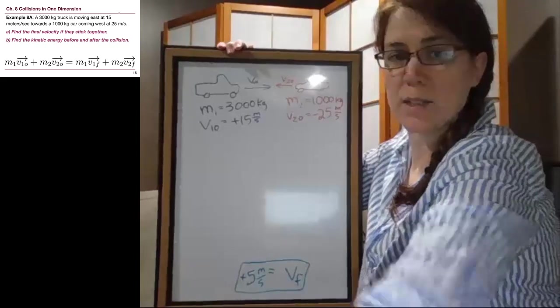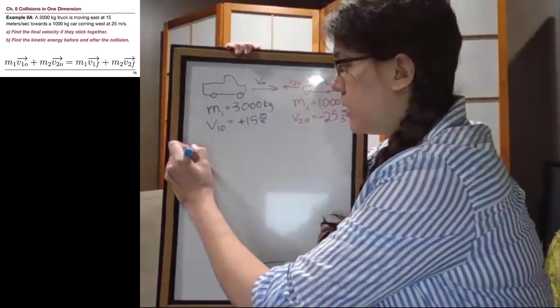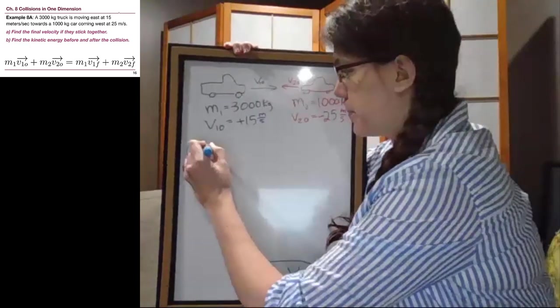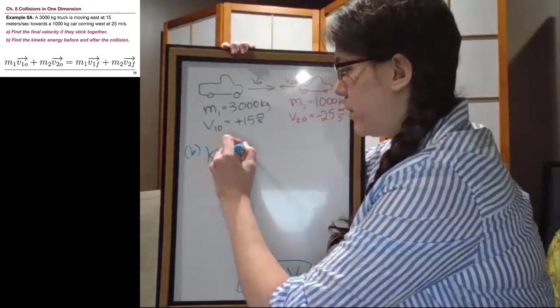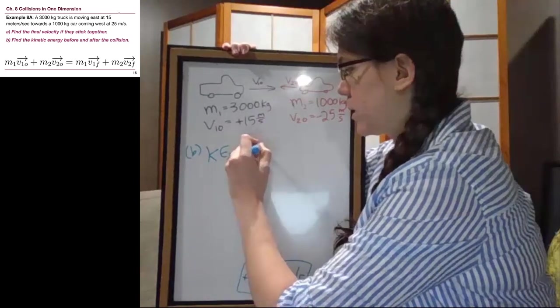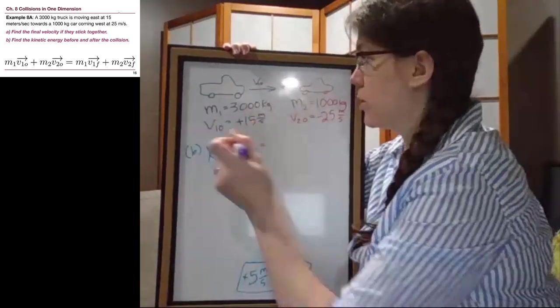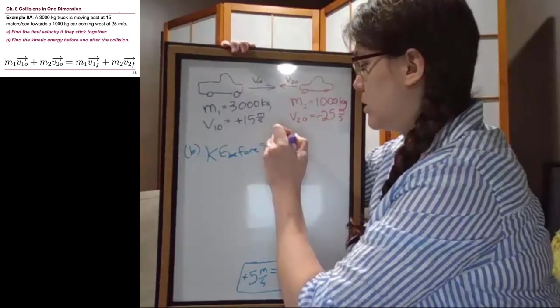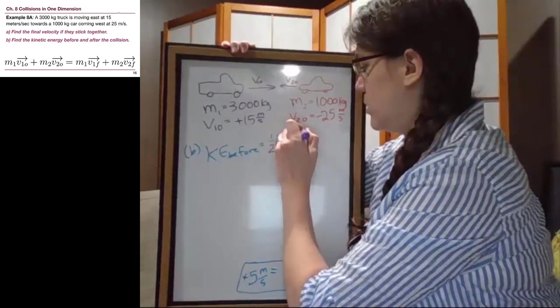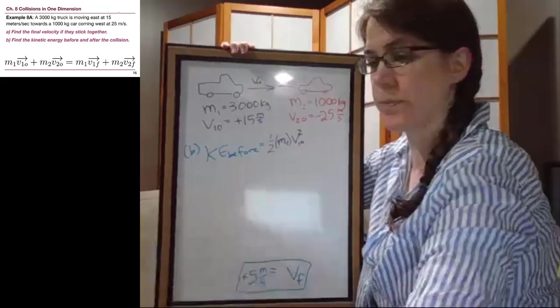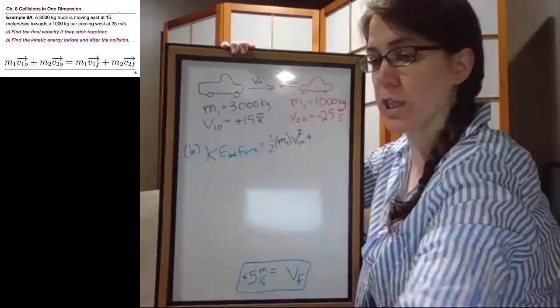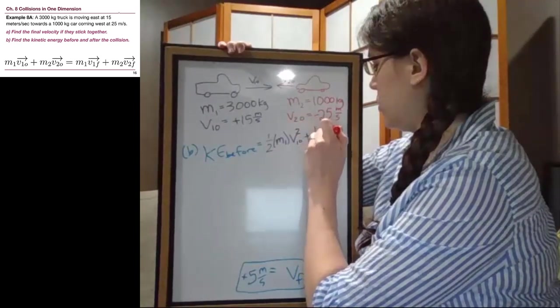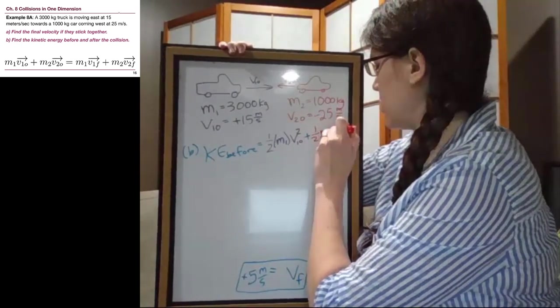So part B is asking us to find the kinetic energy before the crash and after the crash. The kinetic energy before is equal to the kinetic energy of the truck, so one half times M1 times V1 initial squared, and the kinetic energy of the car, so one half M2 V2 initial squared. That's all the kinetic energy for the situation.